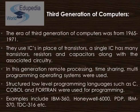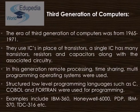Now comes the third generation of computers. That era starts from 1965 to 1971. They used integrated circuits in place of transistors, where a single integrated circuit has many transistors, resistors, and capacitors along with associated circuitry. In this generation, remote processing, time-sharing, and multi-programming operating systems were used, replacing the batch processing in which people had to wait in long queues for their turn.